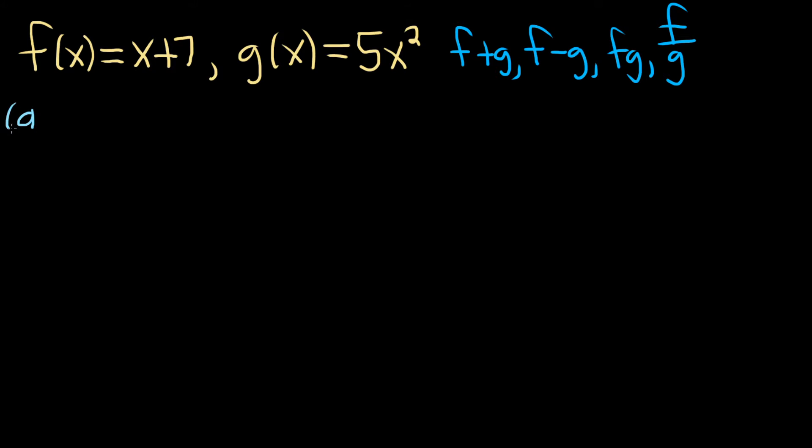First, let's do f plus g. So to find f plus g, all you basically do is add them up. The correct notation would be f plus g of x. This is the correct notation for the sum. And basically, it's just going to be f plus g. If you wanted to show all of the work, you could write it like this: f of x plus g of x.